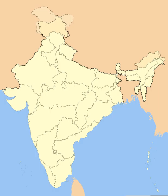Bombay State was split into the linguistic states of Gujarat and Maharashtra on 1 May 1960 by the Bombay Reorganisation Act. Nagaland was formed on 1 December 1963. The Punjab Reorganisation Act of 1966 resulted in the creation of Haryana on 1 November and the transfer of the northern districts of Punjab to Himachal Pradesh. The act also designated Chandigarh as a union territory and the shared capital of Punjab and Haryana. Madras State was renamed Tamil Nadu in 1968. The northeastern states of Manipur, Meghalaya, and Tripura were formed on 21 January 1972. Mysore State was renamed Karnataka in 1973. On 16 May 1975, Sikkim became the 22nd state of the Indian Union and the state's monarchy was abolished.